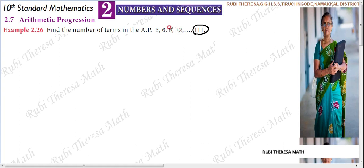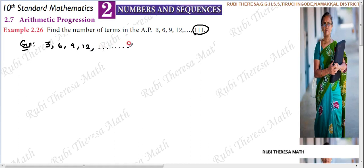This is a finite sequence. The sequence begins 3, 6, 9, 12, and so on. In between, some terms are there, but the last term is given.